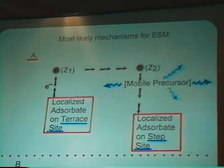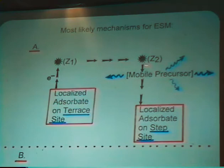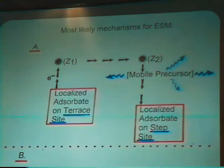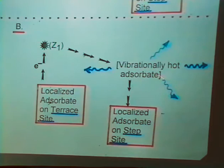We believe these are the two most likely mechanisms. You have localized adsorbate on a terrace site, electron excites it up at some distance z1 from the surface, it begins to move away and at distance z2 it begins to get quenched back into the mobile precursor species which has a lot of mobility and finally ends up as a localized adsorbate on a step site. The other possibility is that the localized adsorbate on a terrace site can be excited upward at position z1, it quickly excites back to a vibrationally hot adsorbate which moves around on the surface and finally ends up at another localized site on a step site. We can't distinguish between these two mechanisms but in a way they're exactly the same mechanism.